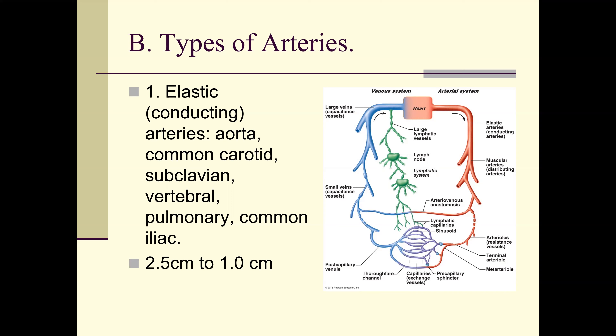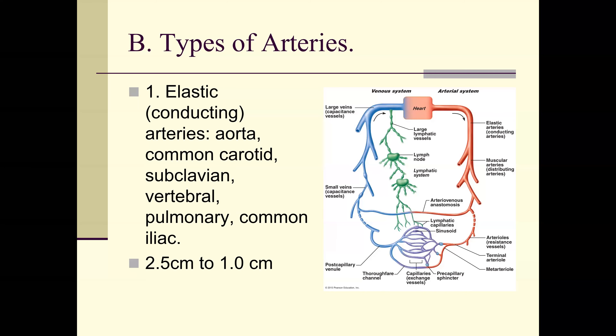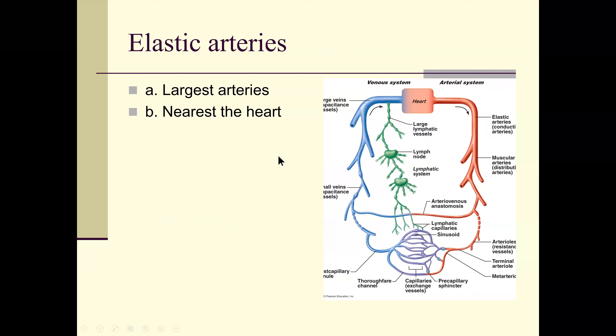Elastic or conducting arteries include the aorta, common carotids, subclavian, vertebrals, and pulmonary. You won't have pictures to identify specific blood vessels — identification is limited to chambers and vessels we've already covered. When the pulse pressure hits elastic arteries, they expand outward and then retract back. They are the largest arteries nearest the heart — highest pressure, fastest blood flow, smooth blood flow.